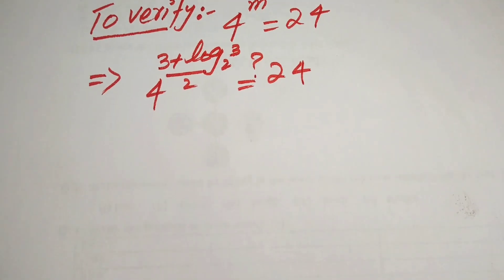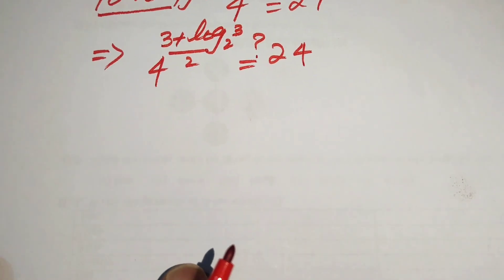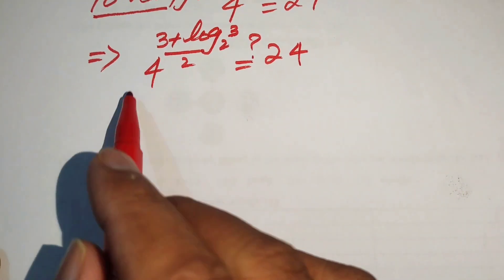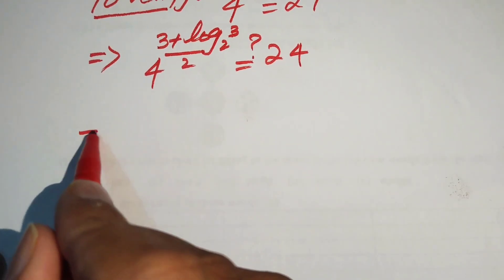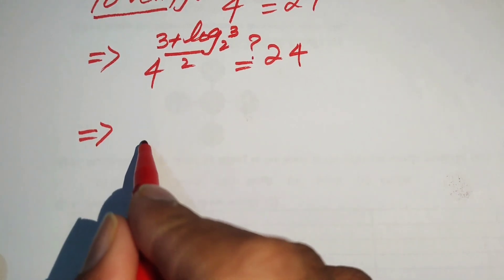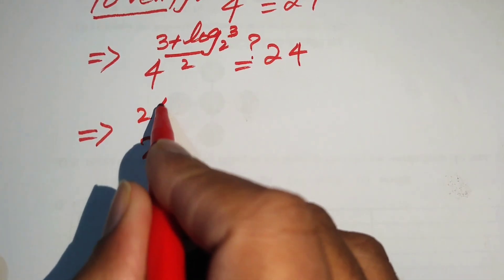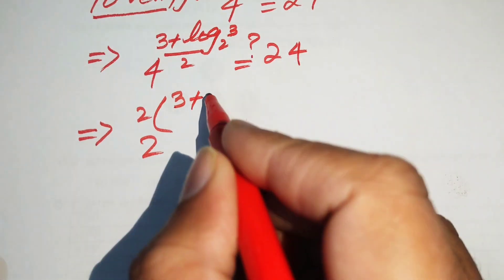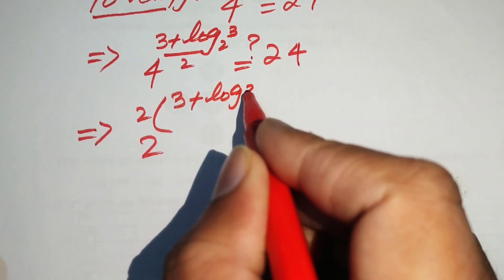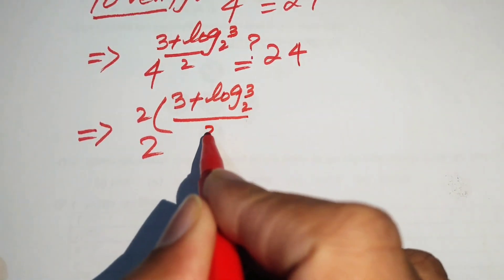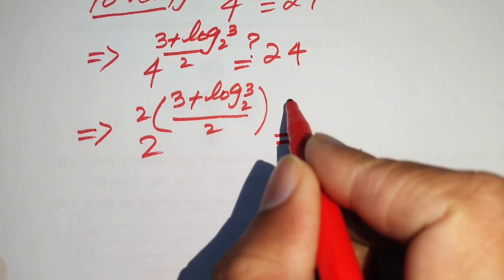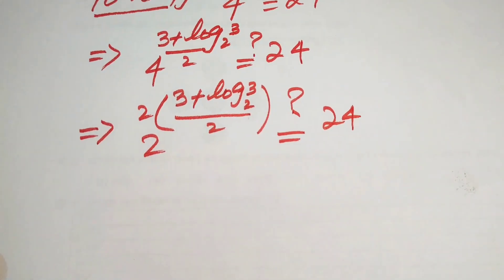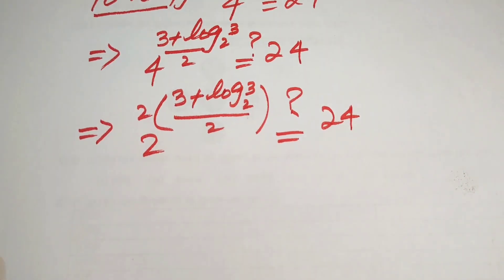We rewrite the base 4 as 2 squared, so it becomes 2 squared to the exponent (3 plus log base 2 of 3) divided by 2, and we check whether this equals 24.